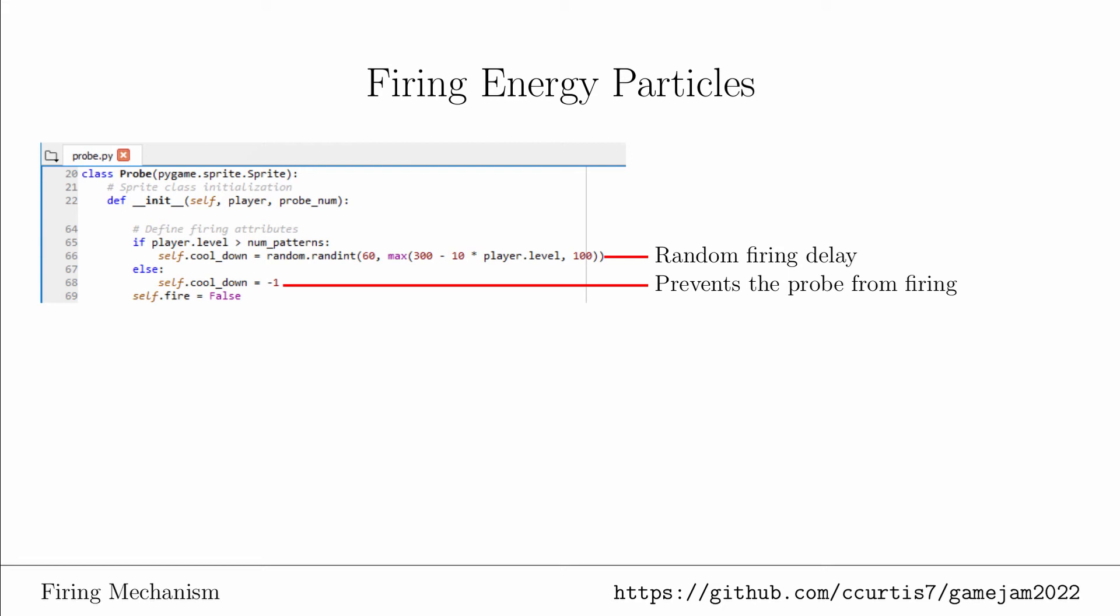But after the first time through, we do want it to fire, and we will give it a random countdown timer. The formula is written this way because we want the probe to fire faster on average as the level increases, and then we will also need to define a firing flag.